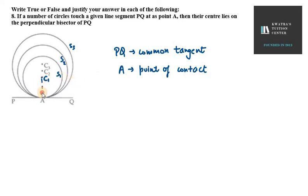So if I join C1 with A, then C1A, which is our radius, is in respect of tangent. And C1A is perpendicular to PQ.